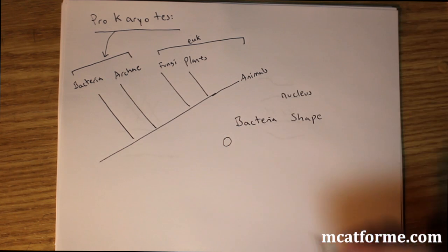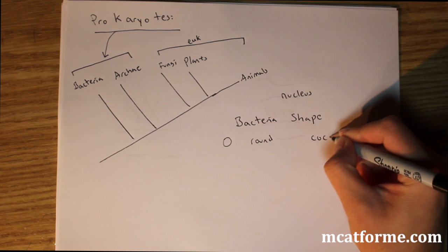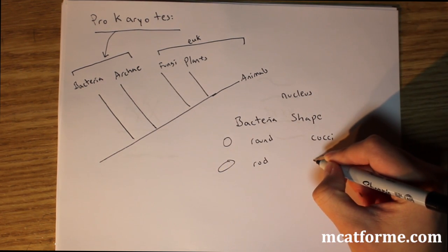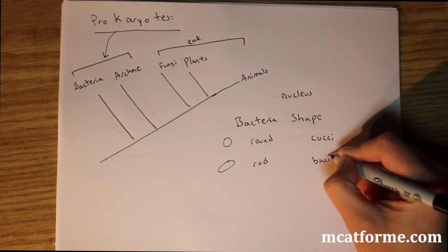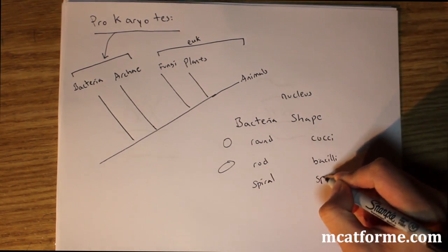We're not going to really look all that much into archaea because they're not all that important when we're dealing with everyday life. So bacteria shape. The first one we have would be round, its name is cosi. Then we have a rod shaped, that would be bacilli. And then spiral shaped, that's the spirochetes.